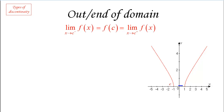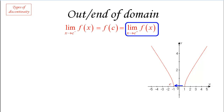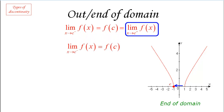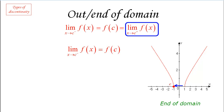More interesting is the case where we are at the end of the domain. Here we cannot approach the function from the right-hand side, so the limit as x approaches c from the right does not exist. However, the other limit may very well exist. In this case we say we are dealing with an end-of-domain problem, where c is the place where the domain ends and the part outside the domain begins.